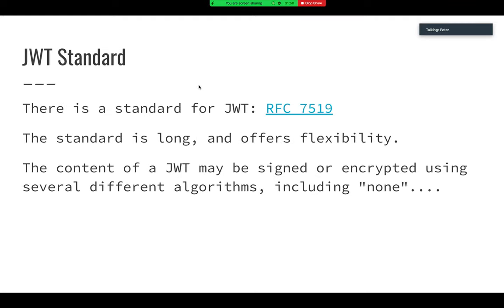There is a standard for JSON Web Token: RFC 7519. It's pretty long, it offers flexibility, and includes a bunch of different algorithms. The content of the JSON Web Token may be signed, or actually the entire thing can be encrypted, and you have your choice of several different algorithms, including one called "none".